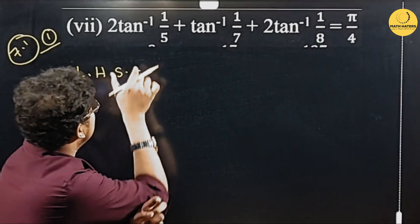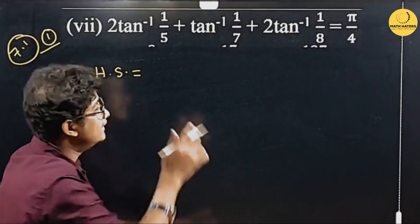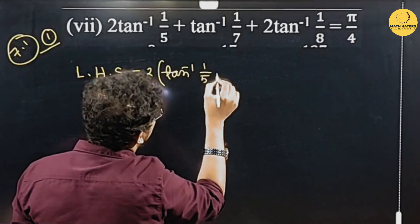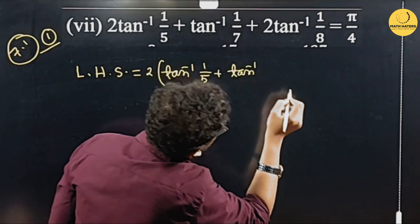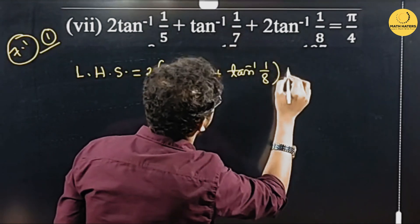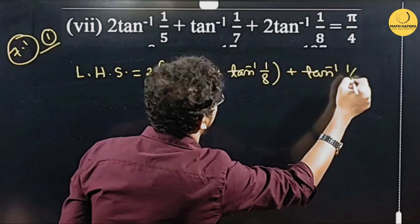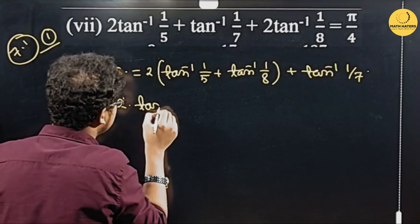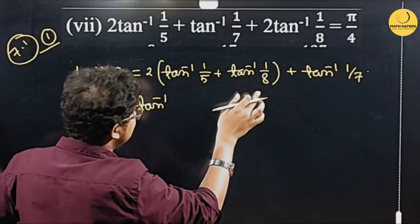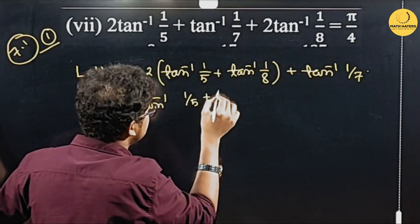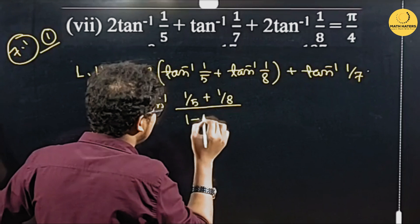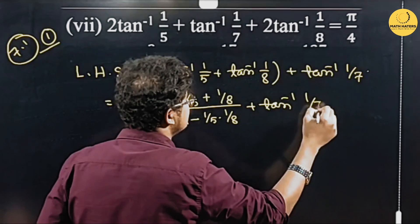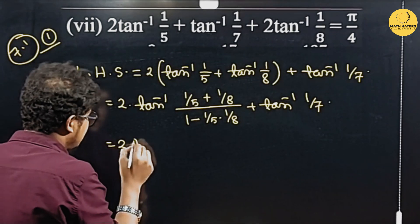2 common is tan inverse 1 by 5, tan inverse 1 by 8, tan inverse 1 by 7. Tan inverse x plus tan inverse y, this is tan inverse x plus y divided by 1 minus xy, plus tan inverse 1 by 7.